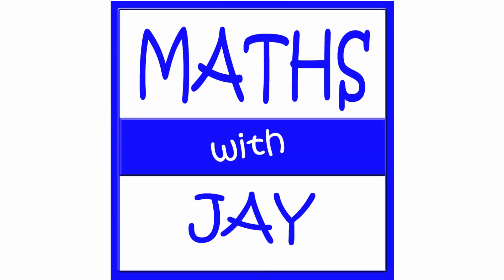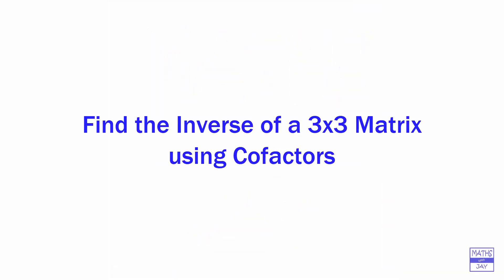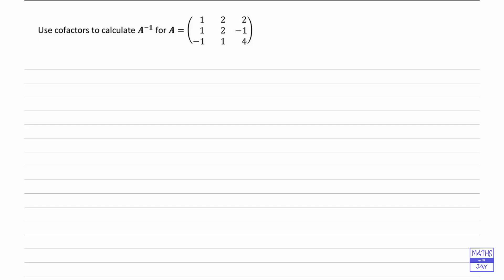Hello, welcome to Maths with Jay. We're going to find the inverse of matrix A by using cofactors, so let's write down the formula that we're going to use. We've got the adjugate or classical adjoint of the matrix A divided by the determinant of matrix A.